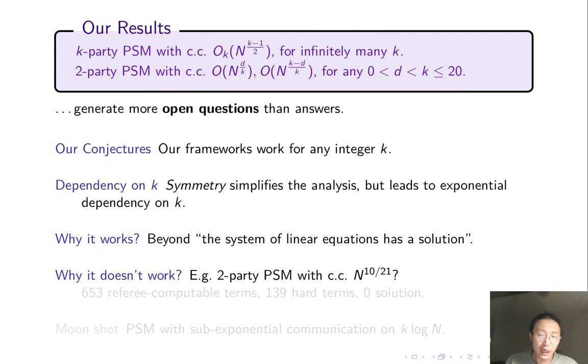There's no clear reason why our frameworks will not yield more efficient PSM. For example, you might ask our two-party PSM framework to find the two-party PSM with communication complexity n to the 10 over 21, which is slightly smaller than square root n. Okay. Given this budget, the framework would find over 600 referee-computable terms and only over 100 hard terms. So it looks very promising. It's probably easy to cancel out 100 hard terms from the 600 referee-computable terms, but it doesn't work. Once the hard terms are canceled out, so is the target. So what's wrong here? What is the reason behind?